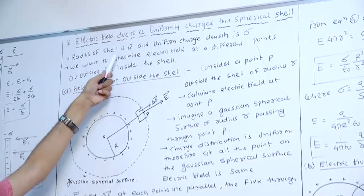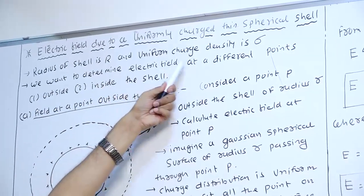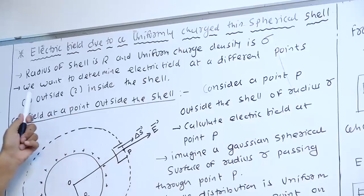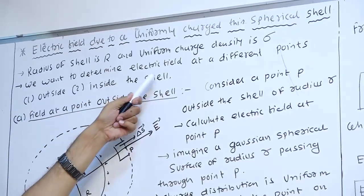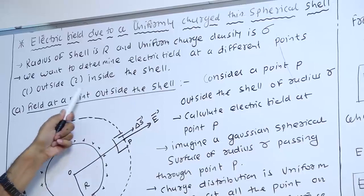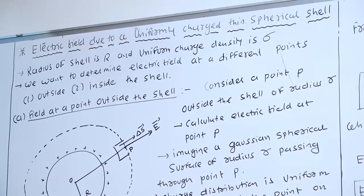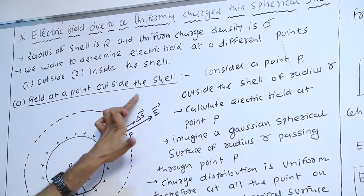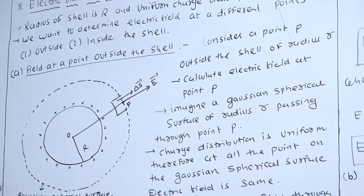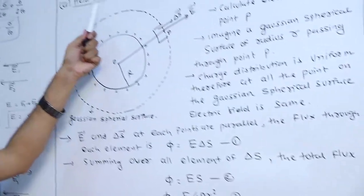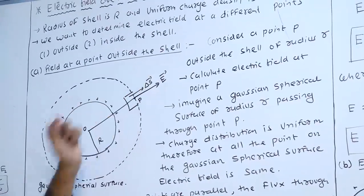The radius of the shell is capital R, and the uniform surface charge density is sigma. We want to determine the electric field at different points outside and inside the shell. The first part covers the field outside the shell, and the second part covers the field inside the shell.